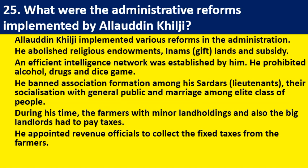Alauddin Khilji implemented various reforms in the administration. He abolished religious endowments, in-arms lands, and subsidies. An efficient intelligence network was established by him. He prohibited alcohol, drugs, and dice games. He banned association formation among his sardars, that is lieutenants. During his time, farmers with minor holdings and also the big landlords had to pay taxes. These six points are enough for full marks.